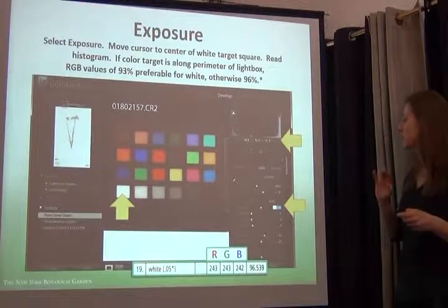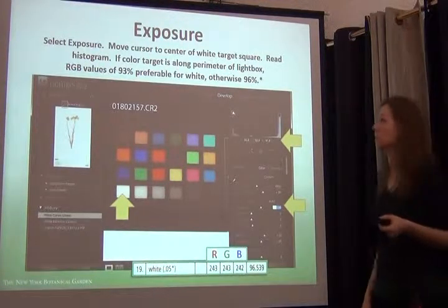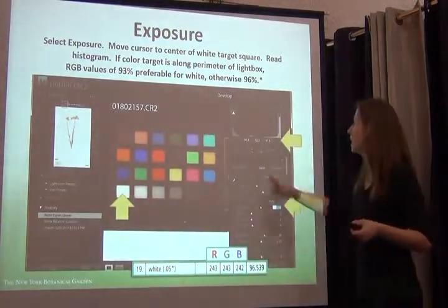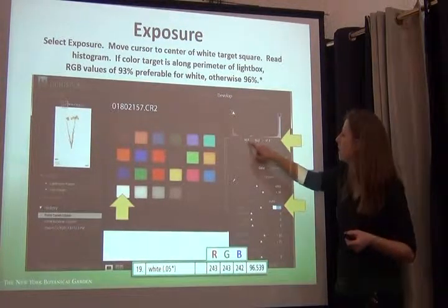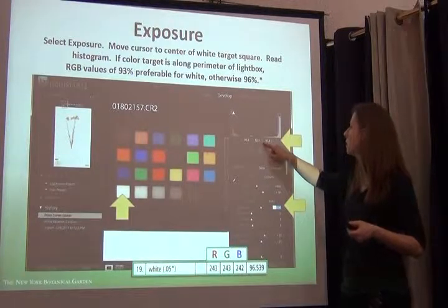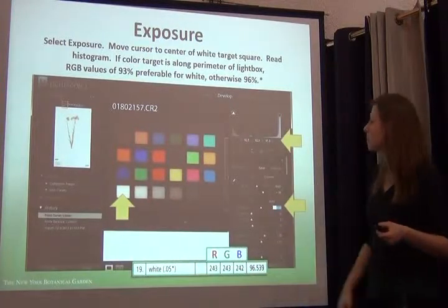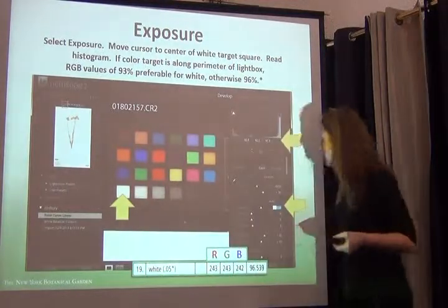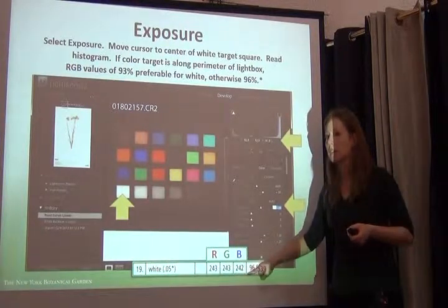After I've selected tone curve linear, I need to check the exposure. I move my mouse cursor over the white square, and as I do that I see these numbers change. You can see this is red, this is green, this is blue — they're around 92.8, 92.5, 91.9. They normalize when I white balance. So when I hover over the white square and I see numbers close to 96, then I'm satisfied with the exposure.